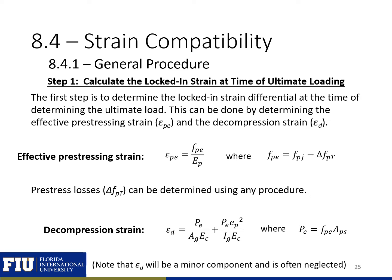On the next few slides, I'll go through the general procedure for using the strain compatibility approach. Step one is to calculate the locked-in strain at the time of ultimate loading. We need the effective pre-stressing strain and the decompression strain. We determine pre-stress losses using any procedure, subtract total losses from the jacking stress to get the effective stress, then divide by the pre-stressing modulus to get the effective pre-stressing strain. The decompression strain is found using the effective pre-stressing force and gross section properties. This epsilon_d is a minor component and often neglected.